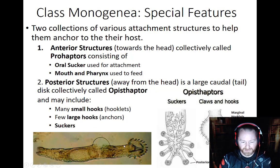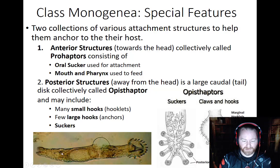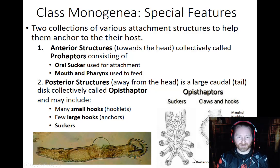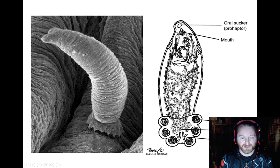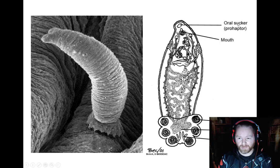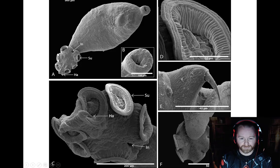Looking at a specimen photographed under a microscope, here's the prohaptor at the front end with some suction cups. You can also see the pharynx used for feeding. On the posterior end there are marginal hooks and two big anchors — that's the opisthaptor, which allows it to stay attached to its host. Here's another diagram pointing out the different variations: the mouth, the pharynx, and the oral sucker. Here's what it looks like under a scanning electron microscope as well.